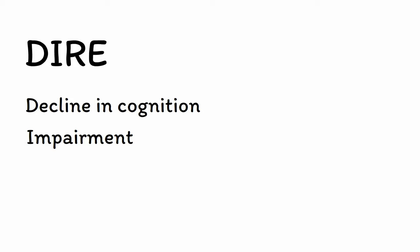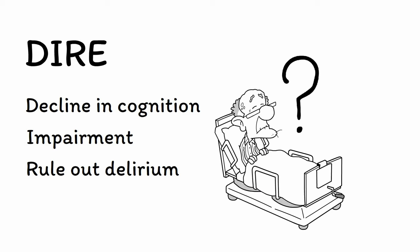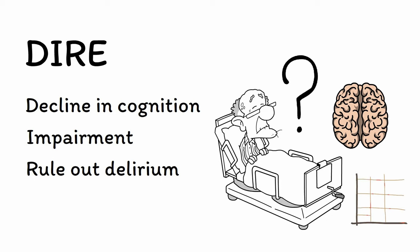After establishing both a cognitive decline and functional impairment, you need to rule out delirium as a possible cause. Delirium is an acute state of confusion that can present similarly with memory loss and other cognitive deficits. However, it's not permanent in the same way that dementia is and will generally resolve once you've treated the underlying condition. Because of these major differences in both prognosis and treatment, ruling out delirium is essential.